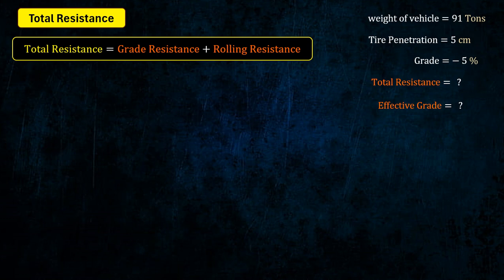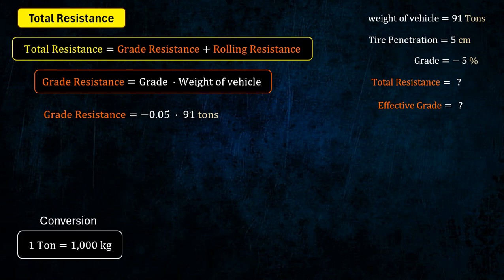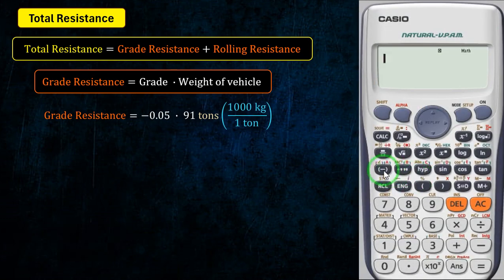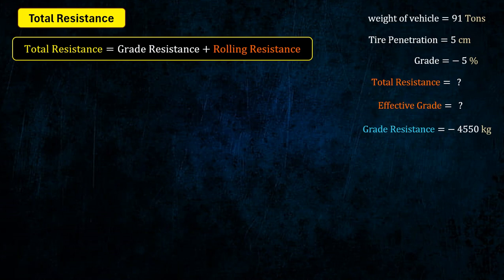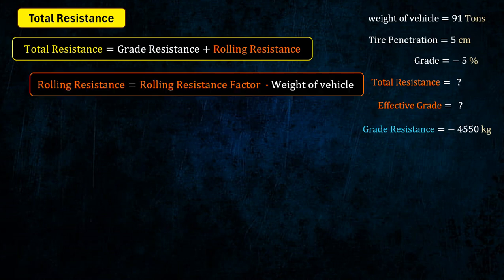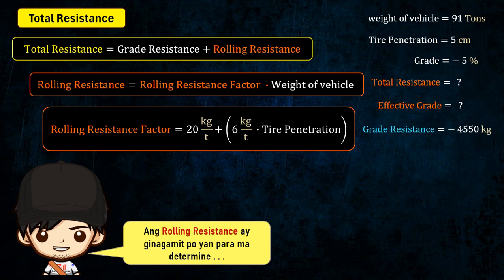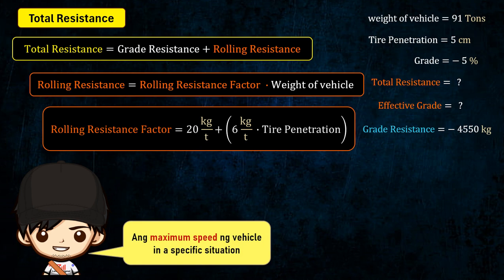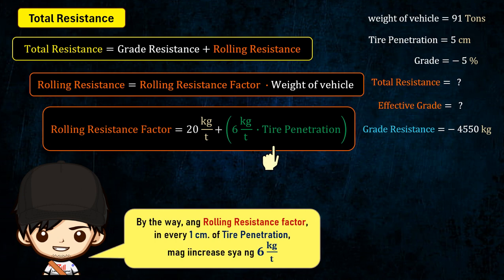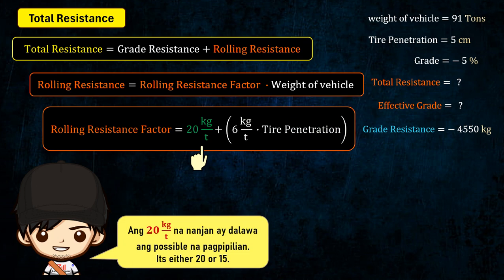Total resistance is composed of grade resistance and rolling resistance. We will determine the rolling resistance factor to proceed with the calculation.